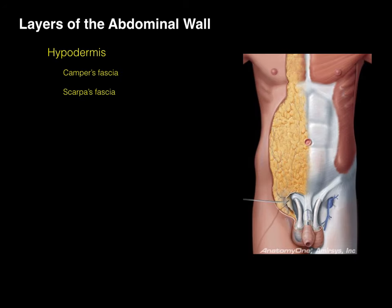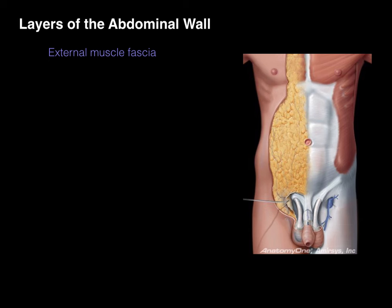The second layer is the hypodermis, made up of fascia. Camper's fascia makes up the majority of this — it's adipose tissue and it's the fat that makes the pannus, or that beer belly. On the very deep surface of Camper's fascia is a more fibrotic layer called Scarpa's fascia. It's only found between the umbilicus and the inguinal region, it's thicker, and it can actually be sutured.